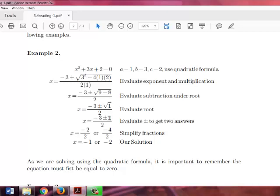Negative 3 plus 1 is negative 2 divided by 2 is negative 1. Negative 3 minus 1 is negative 4 divided by 2 is negative 2.